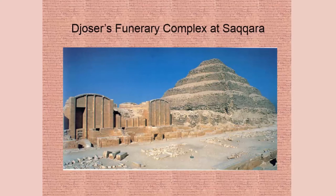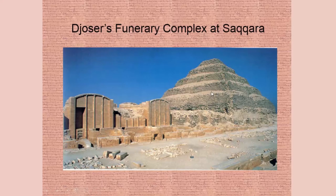Here's an overview of Djoser's — or Zoser's — funerary complex at Saqqara. You can see clearly how this is mastabas piled on top of each other, and in this necropolis there are many mastabas all around and all sorts of other buildings as well.